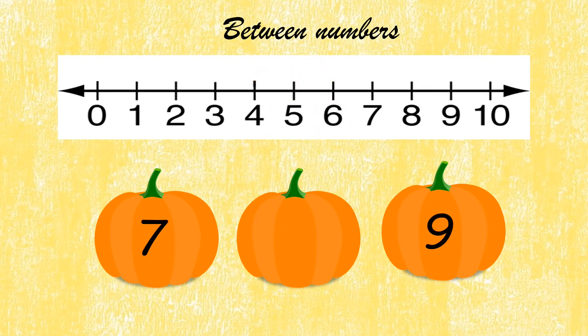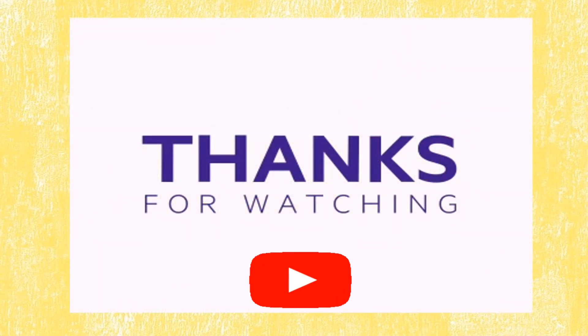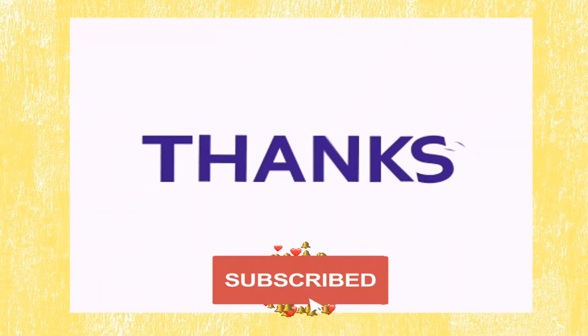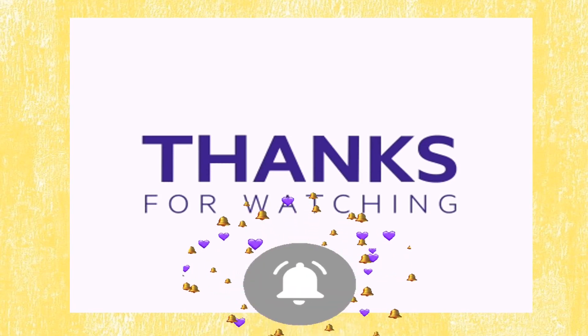The given numbers are 7 and 9. Find 7 and 9 on the number line — the between number is 8. Hope you liked the video! Thank you for watching. For more videos, subscribe to my channel. Thank you!